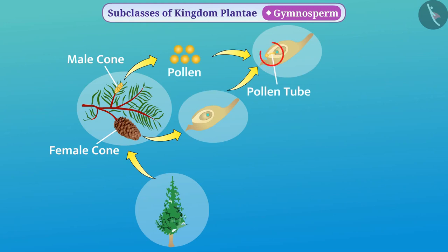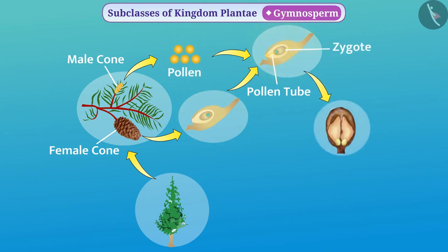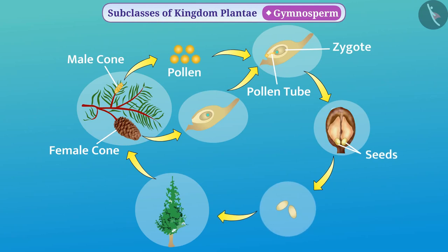The fertilization of male gametes with the female gamete produces a zygote, which grows and develops into a seed. The female cones open at the appropriate time and the seeds get dispersed.